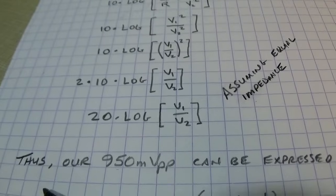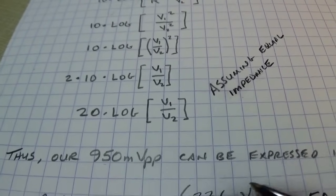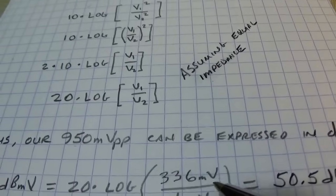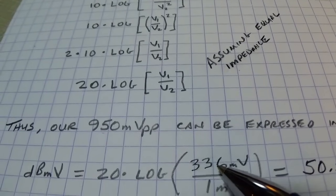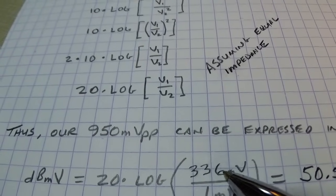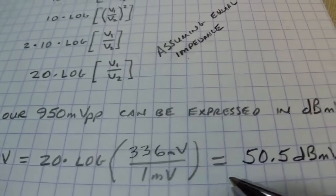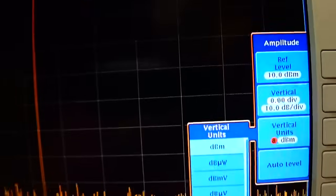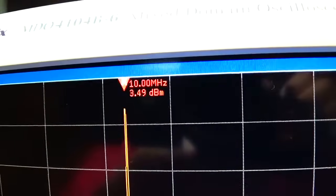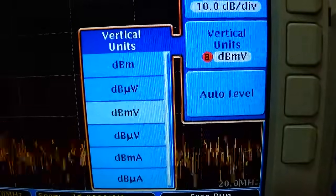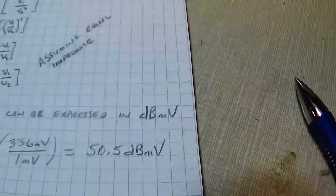For our 950 mV peak-to-peak signal, expressed in dBmV (dB relative to 1 millivolt): dBmV = 20 × log(336 mV / 1 mV) = 50.25 dBmV. Changing the spectrum analyzer units to dBmV shows 50.5 dBmV — essentially matching our calculation.